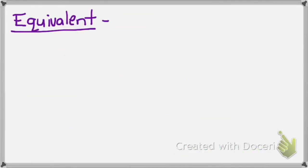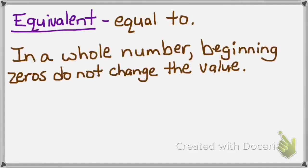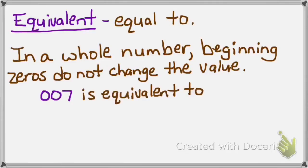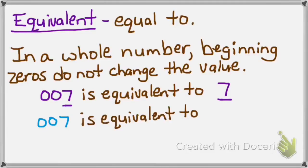Our next vocabulary word is equivalent, and equivalent means equal to. As a review, in a whole number, beginning zeros do not change the value. For example, 007 is equivalent to — or equal to — seven. In 007 I have zero hundreds and zero tens, but I have seven ones, same as the plain number seven. 007 is also equivalent to 0000007 because the beginning zeros don't change the value. In either case, I still only have seven ones — they're equivalent.